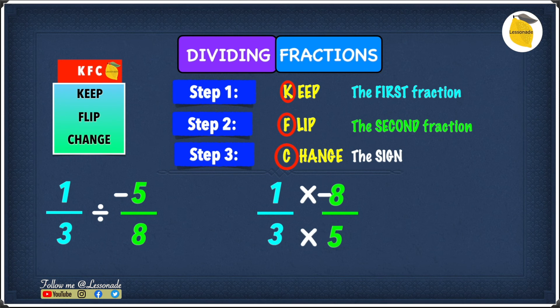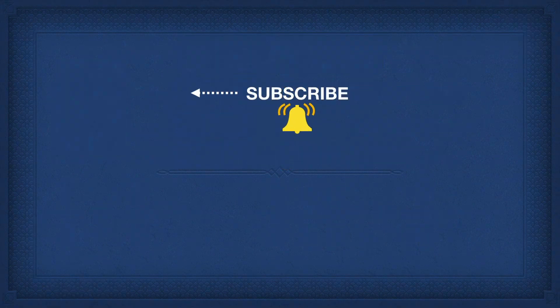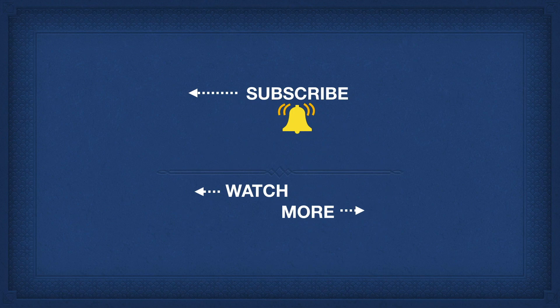Now moving into multiplication, we have to find 1 times minus 8 and 3 times 5. 1 times minus 8 gives you minus 8, and 3 times 5 gives you 15. So the answer to this question is minus 8 over 15. To learn more 11 plus maths, click the video on the right, and to learn the previous topic click the video on the left. Thank you for watching — please subscribe and I'll see you next time.